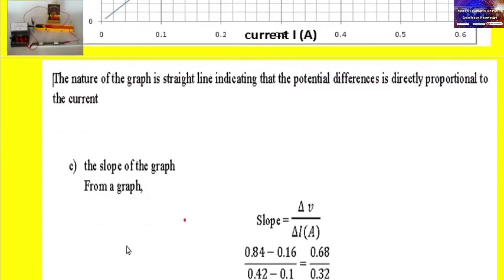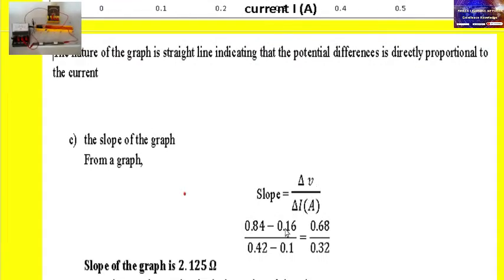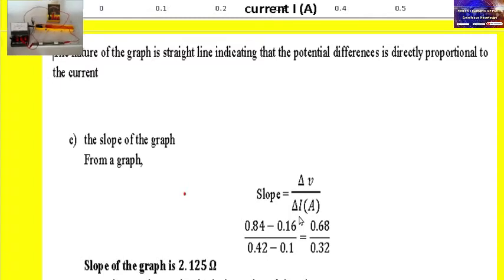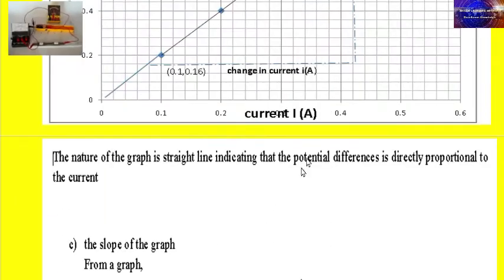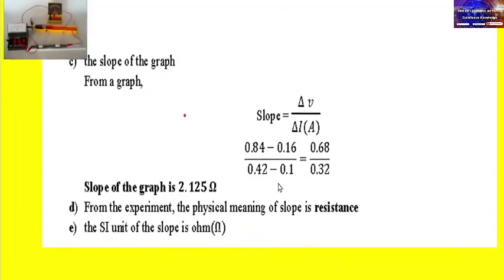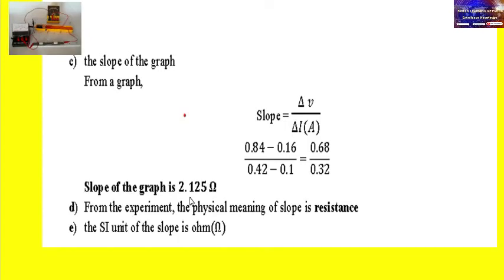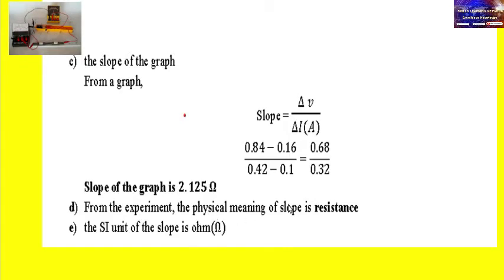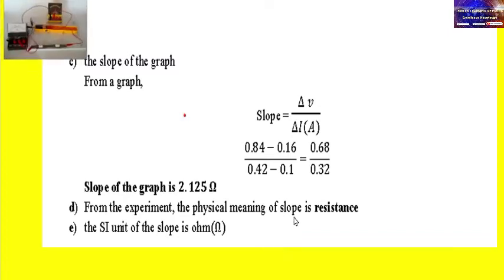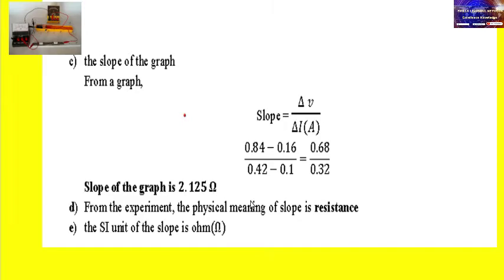The slope from the graph is equal to the change in potential difference (V) divided by the change in current (A). After locating the points, calculate the slope. The value of the slope is approximately 1.225 ohms. The SI unit of the slope is ohms (Ω). From the experiment, the physical meaning of the slope is resistance.